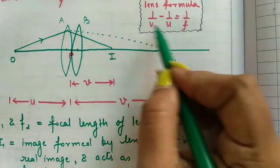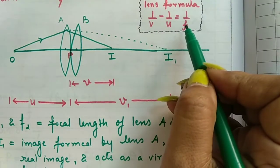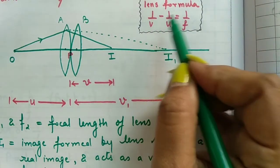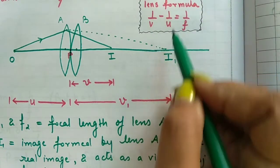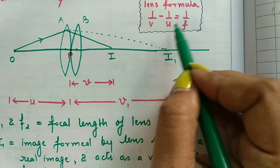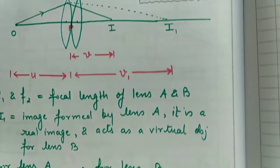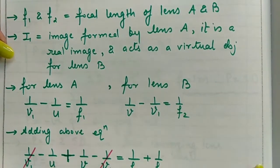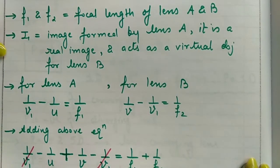So if I want to write this formula for lens B, it becomes 1 upon V, this image distance, minus 1 upon V1. Object distance needs to be written, which is V1 here. This equals 1 upon F2, which was the focal length of lens B. So this way I've written equations for both lenses.